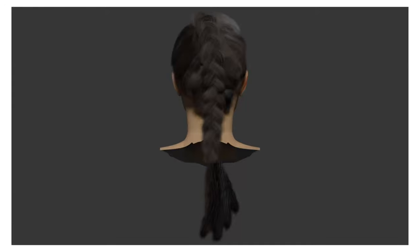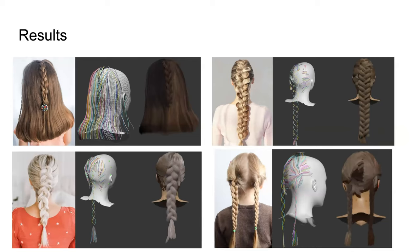Here we show the reconstruction results of the braid hairstyles. The input braid hair images are different in hair strand length, hair color, braid styles, and number of braids. Our results showcase how the procedural modeling is faithful to the shape of the hairstyle and braids. The first image in each section is the input image, the second shows the guide hair curves, and the last shows the procedural modeling and rendering. For example, from the top-left input image we extract 138 guide curves and generate 124,000 dense hair strands as well as 12,000 braid strands.